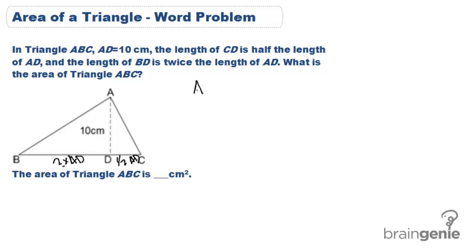We know that our formula for area is one half base times height. And we know that our height, or the line perpendicular to our base, is AD, which is 10 cm.